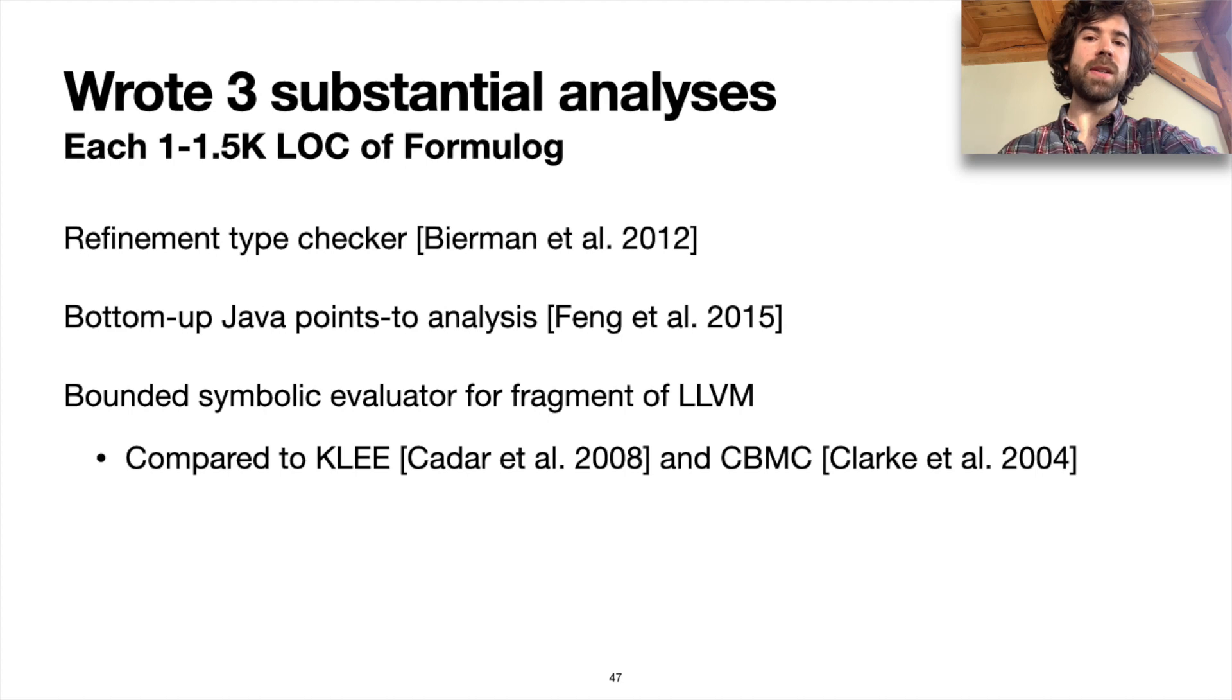Each of these analyses is between 1 and 1.5 thousand lines of code. So we wrote a refinement type checker, a bottom-up points-to analysis for Java, and then a symbolic evaluator for a subset of LLVM. And this one we compared against KLEE and CBMC.